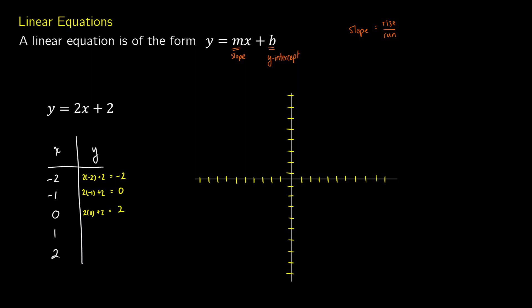We can see a nice pattern here. When x equals 1, y will equal 4, and when x equals 2, y is equal to 6. Looking at our table, when x is equal to 0, y is equal to 2 — this corresponds to our y-intercept, which is where the line crosses the y-axis. Our slope is 2, meaning for every 1 in the x-direction, we go up 2 in the y-direction. There's a ratio: for every 1x, we go up 2y.